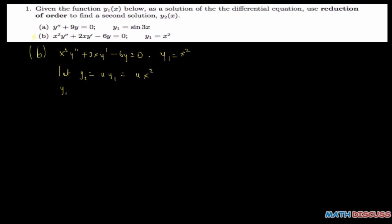To find y2 prime: y2 prime equals u prime x squared plus u times the derivative of x squared, which is 2x. Then we find y2 double prime. Taking the derivative of y2 prime, we get u double prime x squared plus 4u prime x plus 2u. That is our expression for y2 double prime.